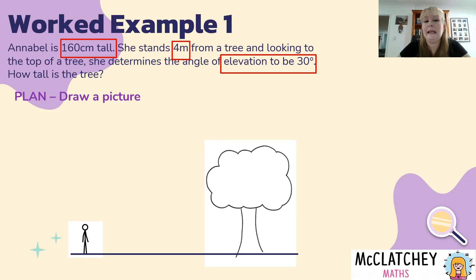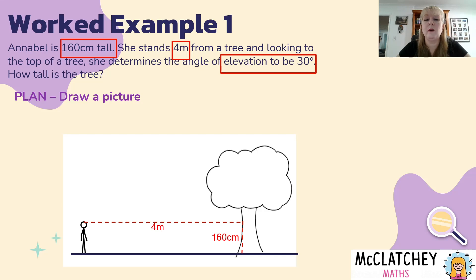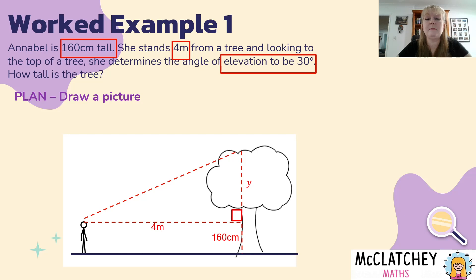We're going to start planning by drawing a picture. I've got stick-figure Annabelle with a stick-figure tree, and we have her looking on the horizontal — it's always important to draw your horizontal line from her line of sight. We can see the 160 centimeters part way up the tree, which forms a rectangle, so Annabelle is 160 centimeters tall on that side as well. Her distance from the tree is four meters. We're not told the length of the line of sight, but we know the triangle formed is a right-angle triangle, and we're going to call the unknown variable — the height of the tree less Annabelle's 160 centimeters — y.